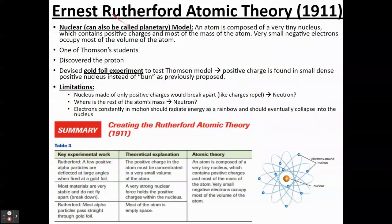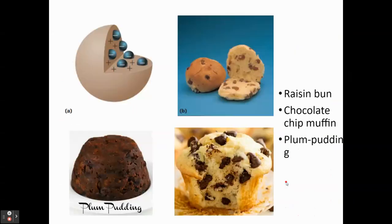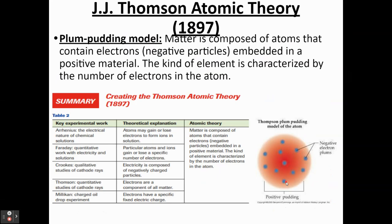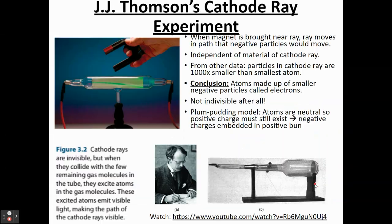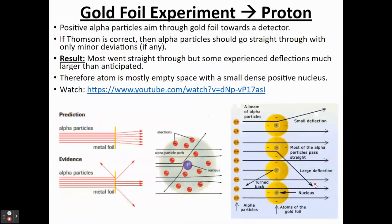Another scientist, Ernest Rutherford, decided to do an experiment called the gold foil experiment. This experiment would lead to a new model rather than Thomson's plum pudding model. Rutherford was essentially testing out Thomson's model.